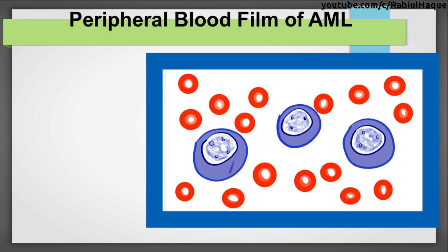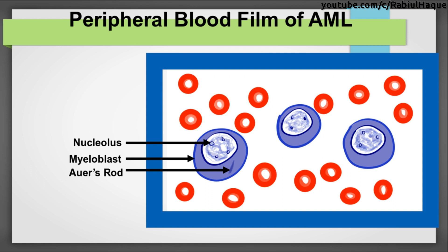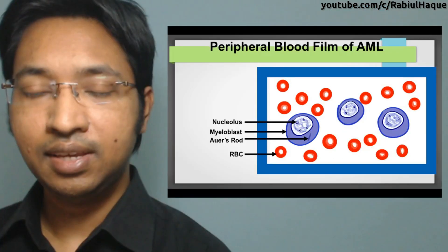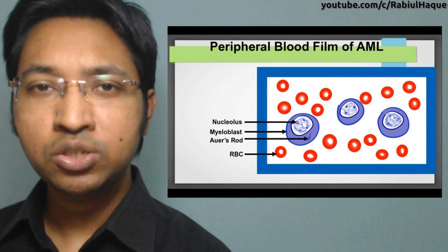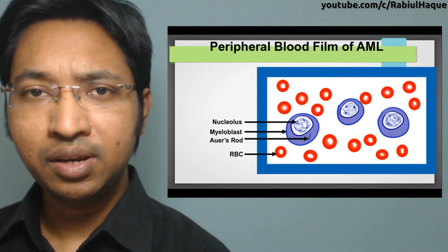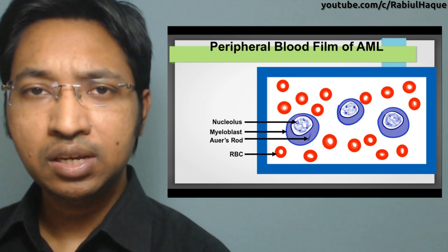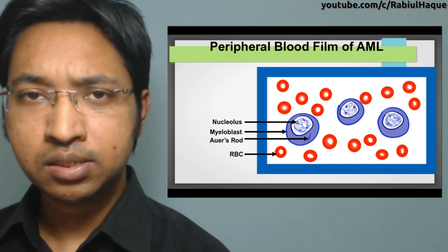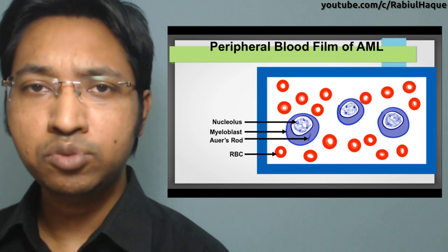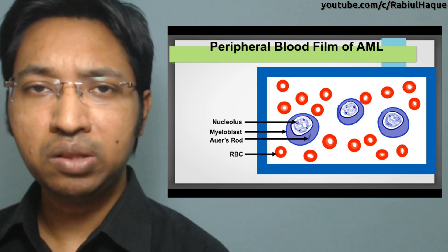In the peripheral blood film of AML we can see myeloblasts. Auer rods are elongated needle-shaped granular materials seen in the cytoplasm of myeloblasts, seen particularly in M2 and M3 AML. Differences between myeloblasts and lymphoblasts: myeloblasts are larger; both have round or oval nuclei; myeloblasts have 2 to 5 nucleoli versus 1 to 2 in lymphoblasts; nuclear membrane is very fine in myeloblasts but fairly dense in lymphoblasts; nuclear chromatin is fine in myeloblasts and coarse in lymphoblasts; cytoplasm is moderate in myeloblasts and scanty in lymphoblasts.